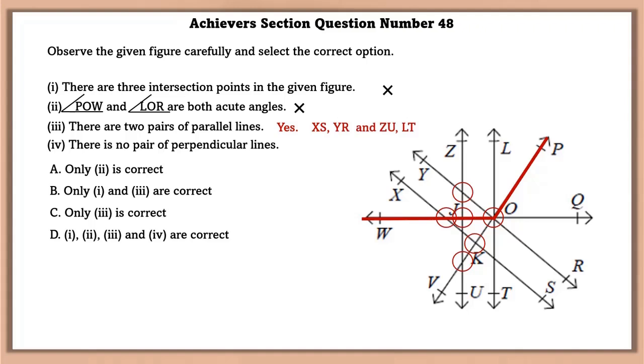There are two pairs of parallel lines. Yes, this is true. The two pairs of parallel lines are X, S, Y, R and Z, U, L, T. There are no pair of perpendicular lines. No, the perpendicular lines are L, T is perpendicular to W, Q, Z, U is perpendicular to W, Q. So the option which is actually correct is the third option.